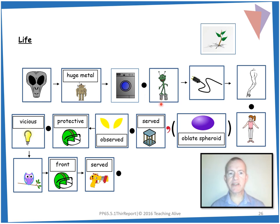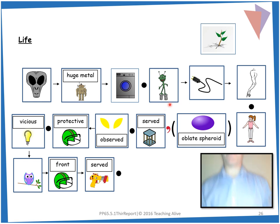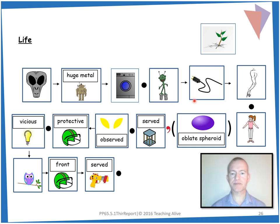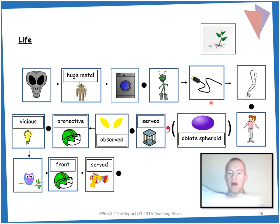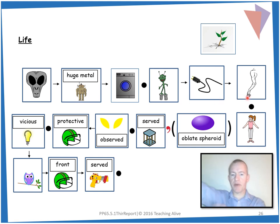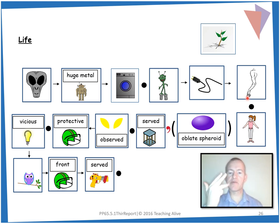Next sentence: it had two stilt-like legs — we can see our stilts, so perhaps stand up for stilt-like — and numerous long cables. Numerous means quite a few, more than two — count on our hand. Numerous long cables — move our arm like a cable, a long cable — to serve as arms, and point to our arm. Full stop. Let's practise that again: it had two stilt-like legs and numerous cables to serve as arms. Full stop.